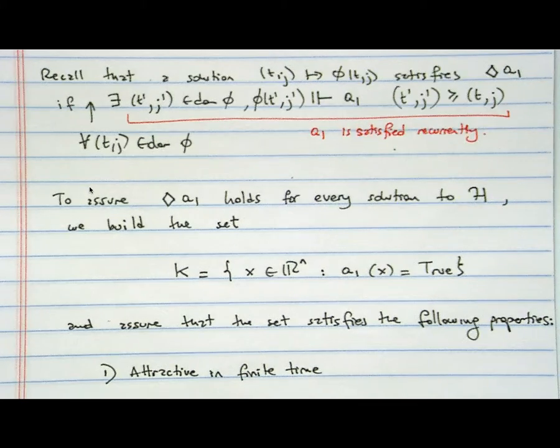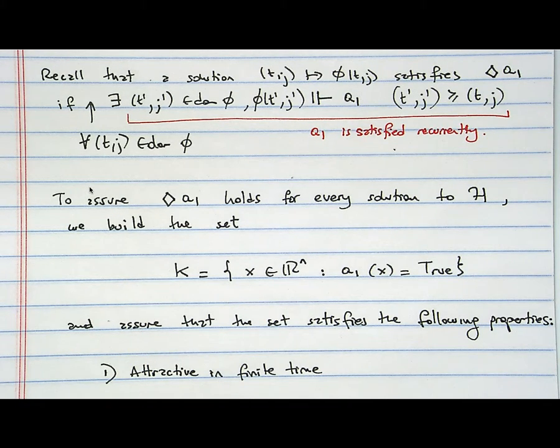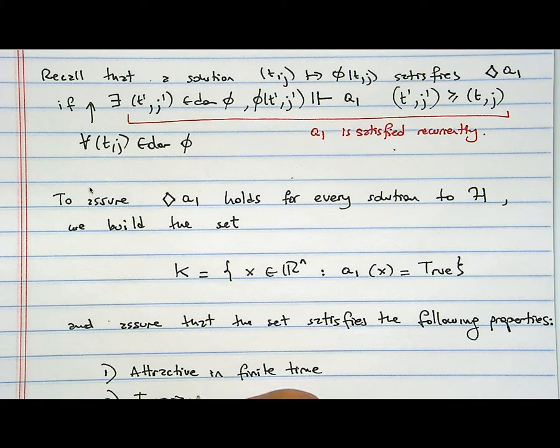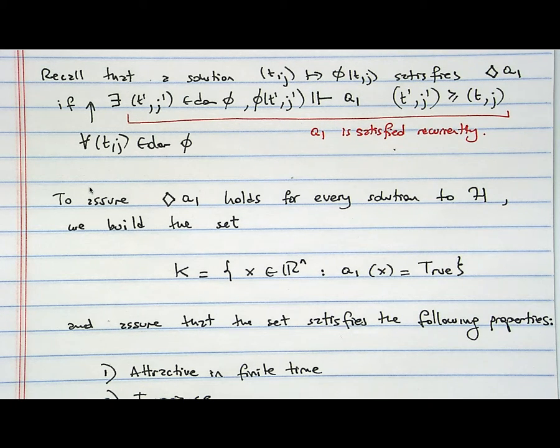So what is one very simple way to satisfy this? We build a set K that is x in R^n such that A1 of x is true, and assure that the set satisfies the following properties. The existence of a (T', J') in the future, let's say at time T' equal to 10, J equal to 2, whatever, could be guaranteed by this set being attractive in a finite amount of time. Okay, so the following properties: first is attractive in finite time, and that will allow me to say that I reach it. So there is (T', J').